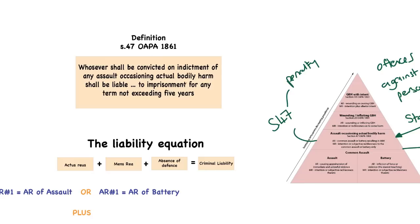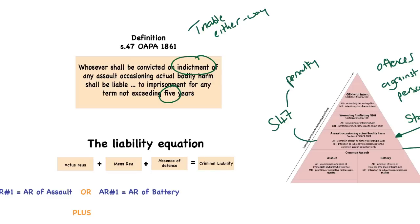That doesn't really help us when we want to look at demonstrating criminal liability for ABH. In short, all it says is that it is triable either way — so it's an either way offence — but if that conviction is one on indictment, so at the higher court, in the Crown Court, then the maximum term of sentence will be five years. So it's an either way offence for which the maximum sentence is five years.